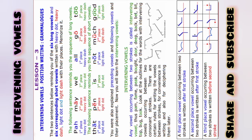First, intervening vowels. The two sentences below remind you of the six long vowels and six corresponding short vowels, written with heavy dot, heavy dash, light dot, and light dash in their respective places. Memorize these.